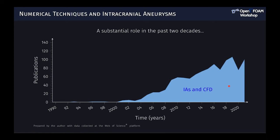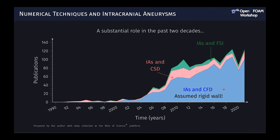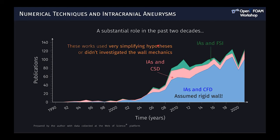Most studies assume the wall to be rigid, so they did not investigate wall mechanics at all. The number of works that actually simulated wall motion and stress — either via computational solid dynamics or fluid-solid interaction techniques — is comparatively small. Those works also had flaws: they either used very simplifying hypotheses or were more concerned about hemodynamics. The simplifying hypotheses were understandable because at the time there was not much information about the constitutive behavior of the intracranial aneurysm wall.